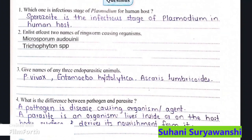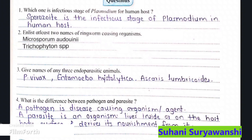First question: which one is the infectious stage of Plasmodium for the human host? That is Sporozoite. Sporozoite is the infectious stage of Plasmodium in the human host.